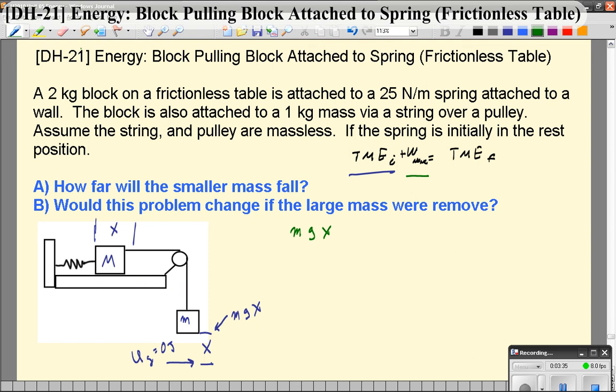So we're only dealing with gravitational potential and spring potential energy here. So in the beginning the total energy of the system is m g x, and at the end all of that energy gets stored in this spring which is going to be one half k x squared.